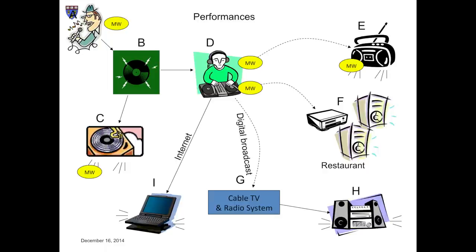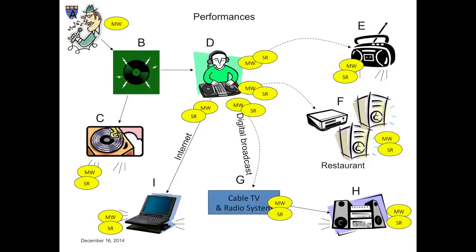Same thing happens with the restaurant. When the station sends the signal containing a rendition of the song, that's a performance. When the restaurant receives that signal and plays it for its customers, that's another performance. Things get even more complicated when we get to the cable system. Here, there are three performances: by the station when it broadcasts the rendition, by the cable system when it relays that signal, and by the homeowner who receives the relayed signal and plays it in her home. With respect to the webcast, there are only two: by the station, and by the recipient when she plays it. Each time A's rendition of the musical work is performed, the sound recording embodying that rendition is also performed, except when A sang it, because there's no recording yet.